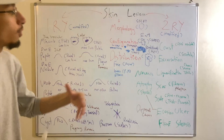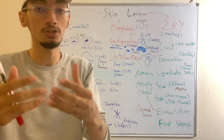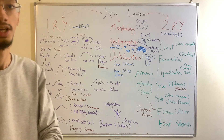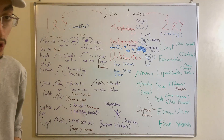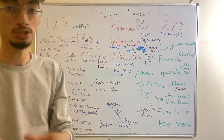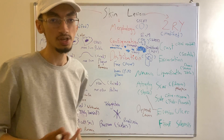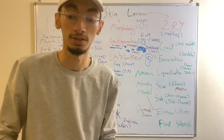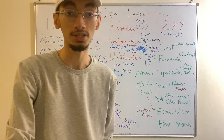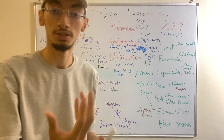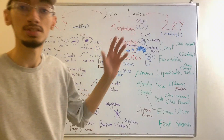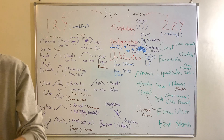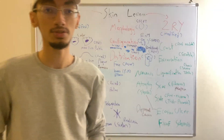Regarding shape, if the lesion is raised, ask yourself: is it filled with fluid? Does it have pus or not? To summarize the morphology framework: first, describe the shape — is it round, oval, or another shape? Second, is it raised, flat, or depressed? Third, if it's raised, is it filled with fluid or pus? Then ask about the size — is it approximately one to five millimeters or one to two centimeters? Then ask about the color — is it erythematous, pinkish, or reddish?